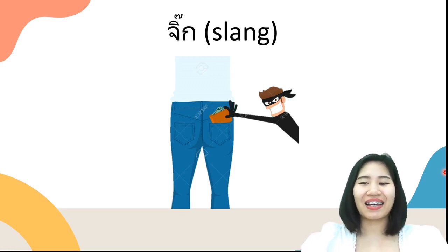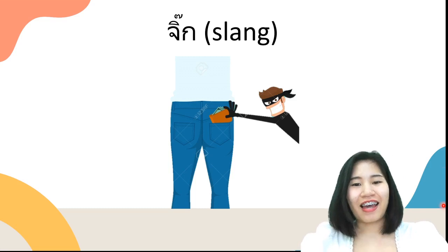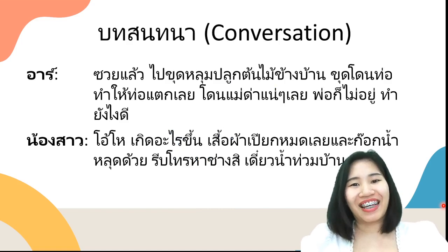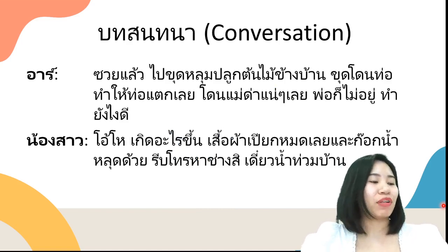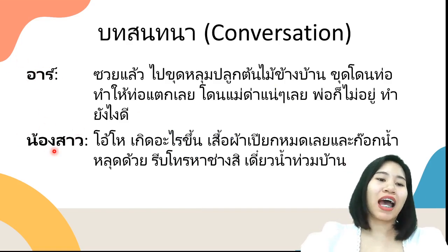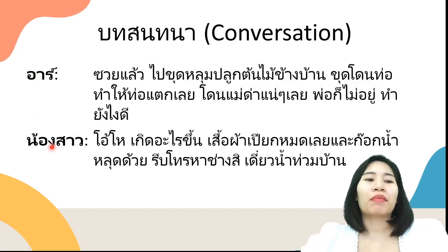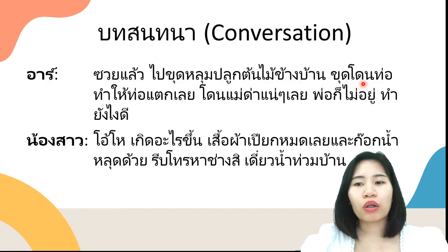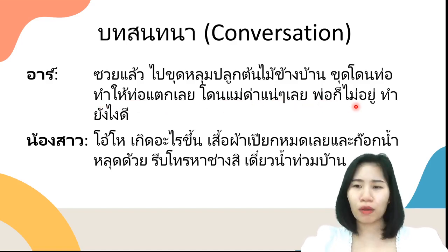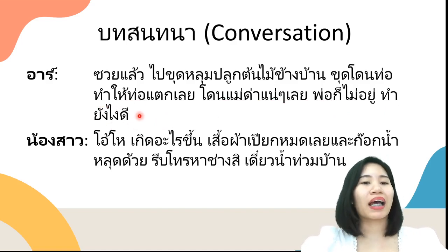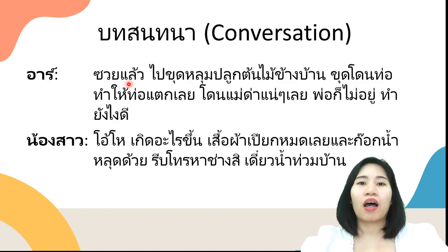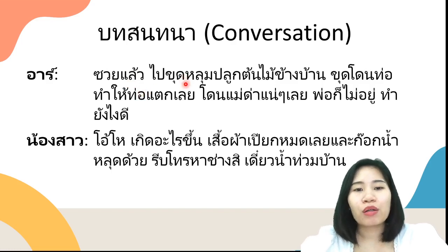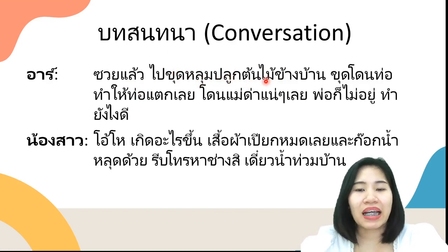We continue with conversation. อา and น้องสาว (younger sister) are talking. อา says: สวยแล้ว — this slang means 'oh I'm in trouble' — ไปขุดหลุมปลูกต้นไม้ข้างบ้าน. ขุด means to dig, หลุม is the hole, so 'I dug a hole to plant a tree next to the house.'